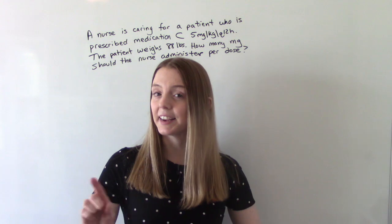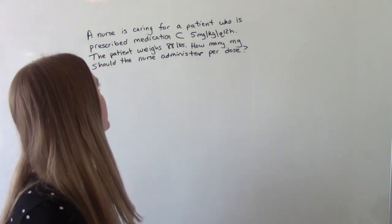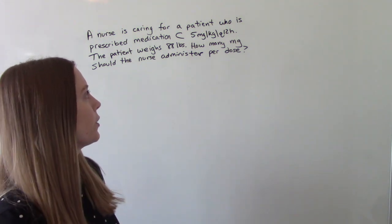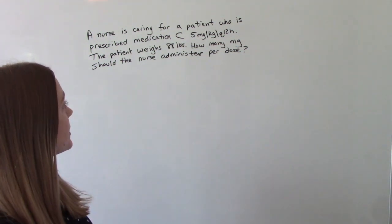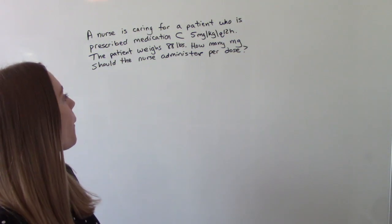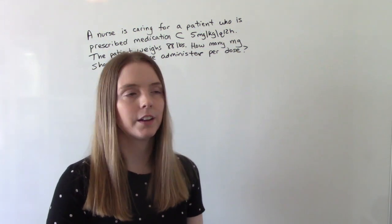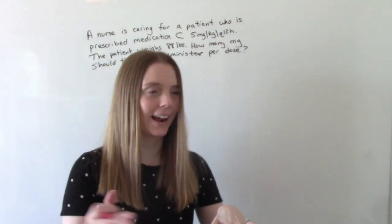Now let's do one with medication C. So the nurse is caring for a patient who is prescribed medication C, 5 mg per kg every 12 hours. The patient weighs 88 pounds. How many milligrams should the nurse administer per dose? So pause it, and now let's figure it out.